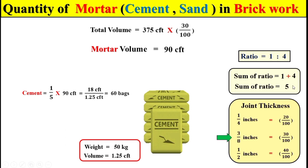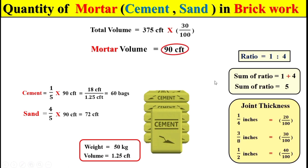To calculate the total quantity of sand, since the total ratio is 5 and the sand portion is 4, we take 4/5 and multiply by the mortar volume to get the total quantity of sand used in this volume.